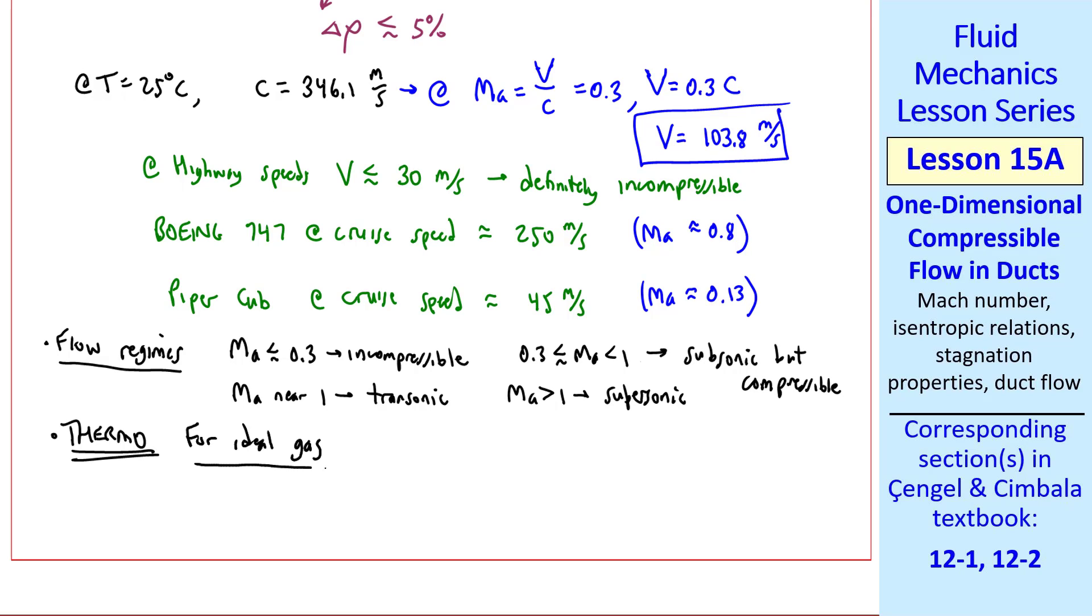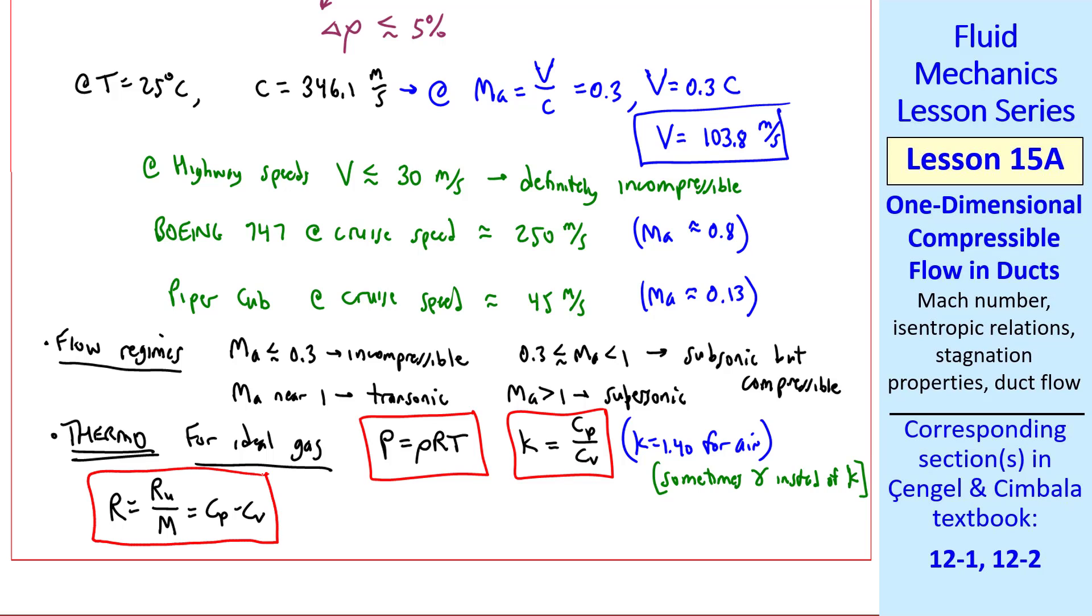When dealing with compressible flow, thermodynamics plays a big role. For an ideal gas such as air, we have the ideal gas law. K is the ratio of specific heats. For air, K is 1.40. The specific gas constant for an ideal gas is the universal gas constant Ru over the molecular weight, also equal to Cp minus Cv. Speed of sound is square root of kRT, and be careful to always express T in Kelvin, not degrees C.